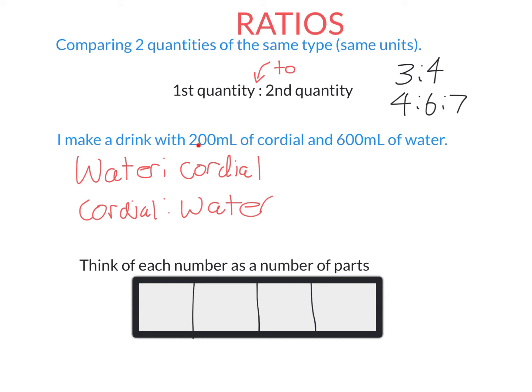Let's say I make a drink with 200 mL of cordial and 600 mL of water. What is the ratio of water to cordial? Because water is listed first, in my answer the number associated with water needs to go first. So it's 600 mL water to 200 mL of cordial.